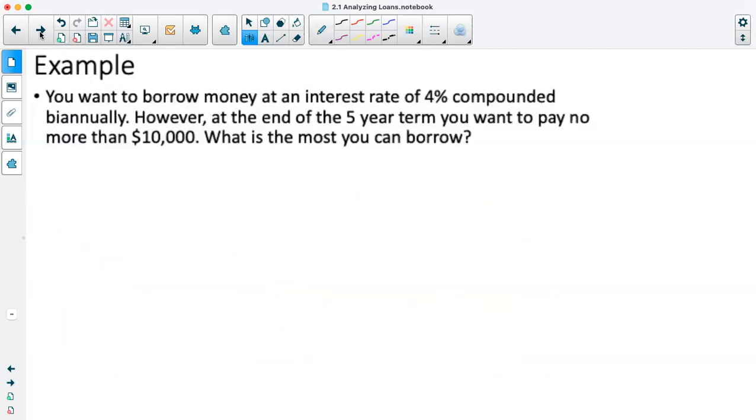Next example, you want to borrow money at an interest rate of 4% compounded biannually, so compounded twice a year. However, at the end of a five-year term, you want to pay no more than $10,000. What is the most you can borrow? So you'll notice in this case, there's no mention of regular payments. So this means we are not going to be using our TVM solver. Instead, we're going to just be using our compound interest formula that we dealt with in the previous chapter.